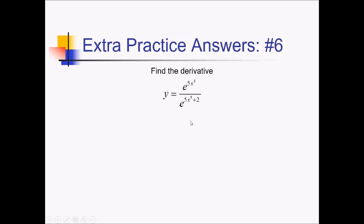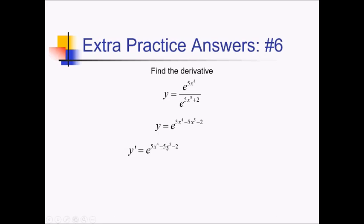For this problem, I'm trying to take the derivative of this quotient. Now you could use the quotient rule here, but there's a better way. Since I have the same base, I can use my exponent rules to simplify: this becomes e to the 5x to the 4th minus 5x to the 5th minus 2 — I subtract the exponents when dividing same bases. Now it's just a chain rule. The outer derivative is e to that same stuff, and then we multiply by the derivative of the inner function: derivative of 5x to the 4th is 20x cubed, minus 25x to the 4th.